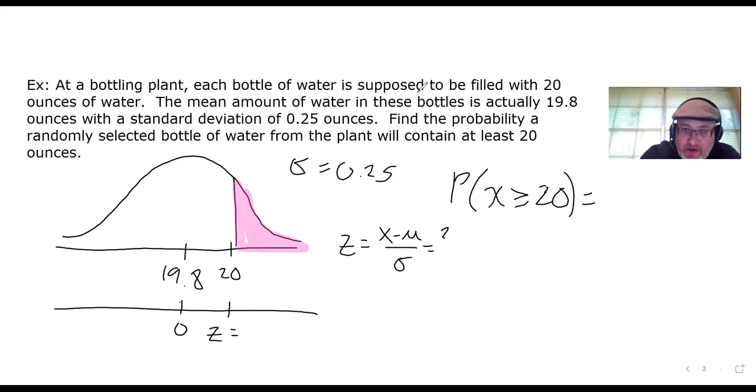X is 20. And the sigma was 0.25. So what is 20 minus 19.8 and then all that divided by 0.25? The top is 0.2 or 0.20, so it's 20 over 25, which reduces to 4 fifths. This should be exactly 0.8. That means that the equivalent problem that we're trying to answer is the probability that Z is greater than or equal to 0.8.